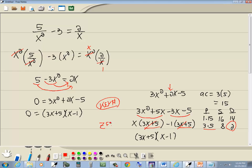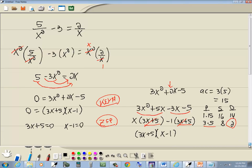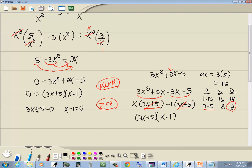0 factor property. It says you get 0 on one side, you factor the other side, you set each factor equal to 0. So I'll set 3x plus 5 equal to 0, and I'll set x minus 1 equal to 0. Now these are linear equations, so we'll go through those steps.